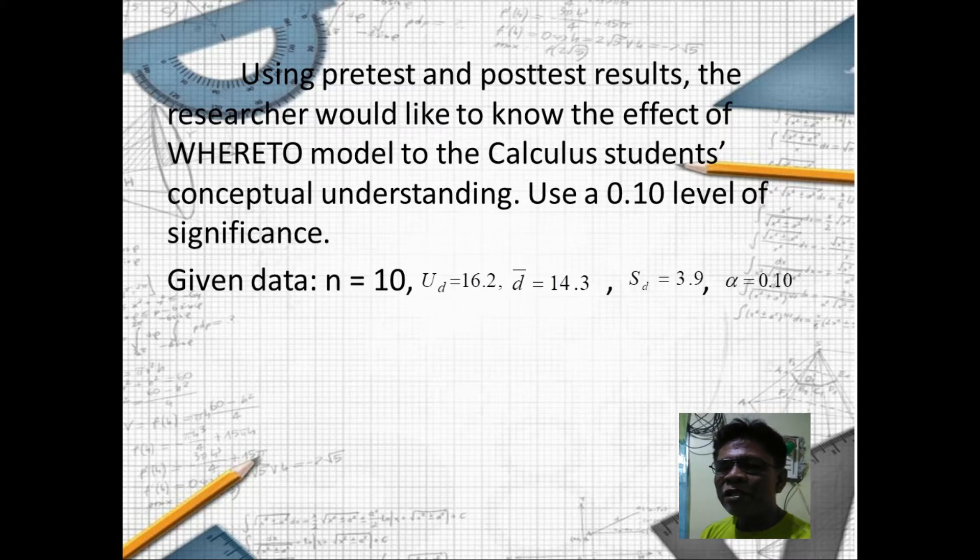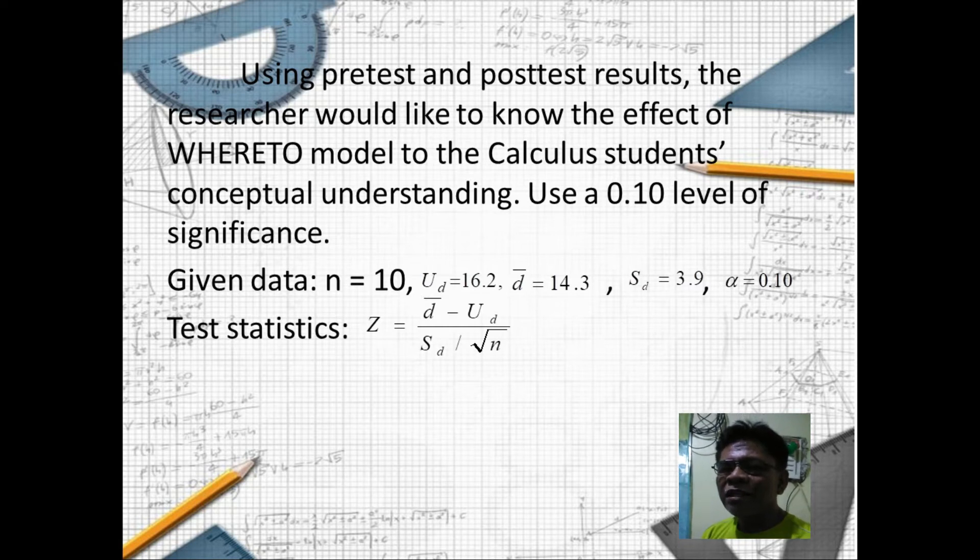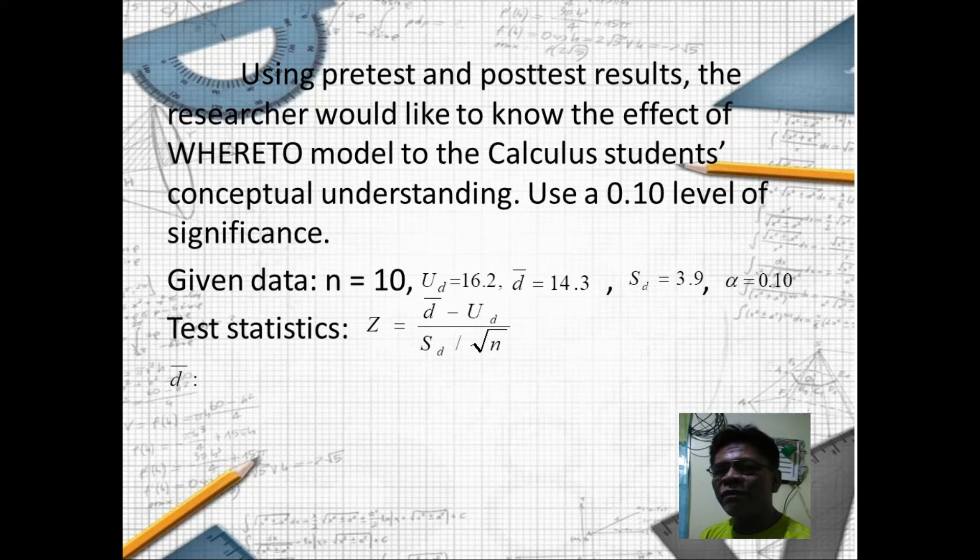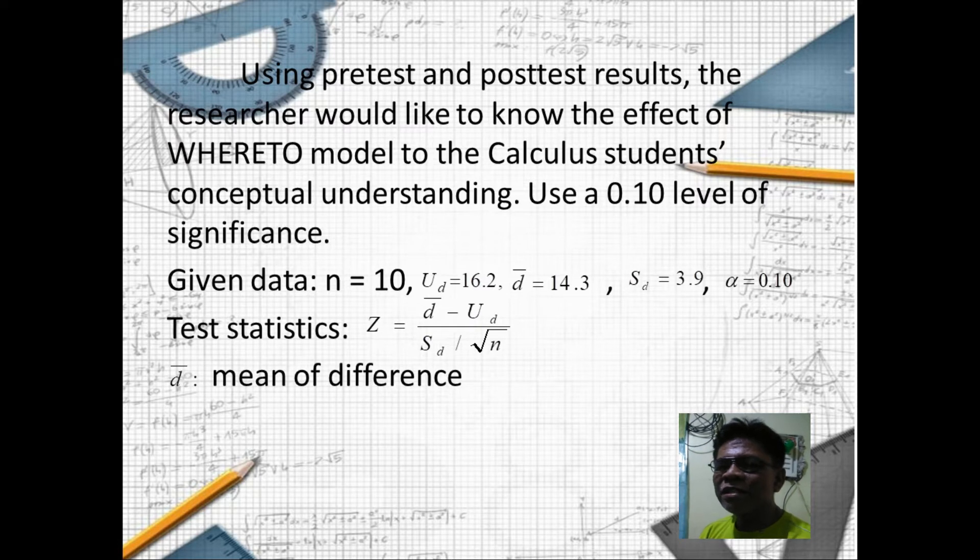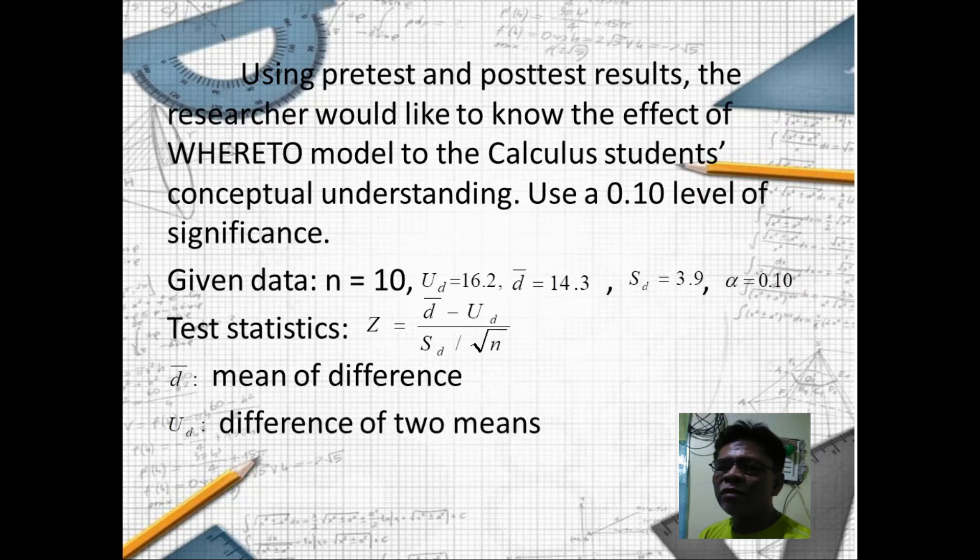Our formula or test statistic is z equals d̄ minus μ_d over s_d divided by square root of n, where d̄ is the mean difference of pre-test and post-test, μ_d is the difference of two means or difference of pre-test mean and post-test mean, and s_d is the standard deviation of the difference.